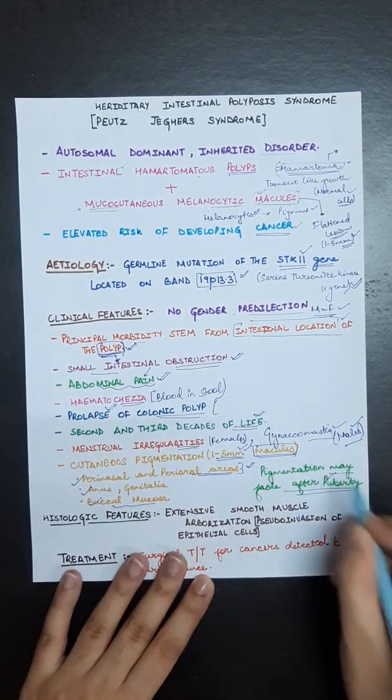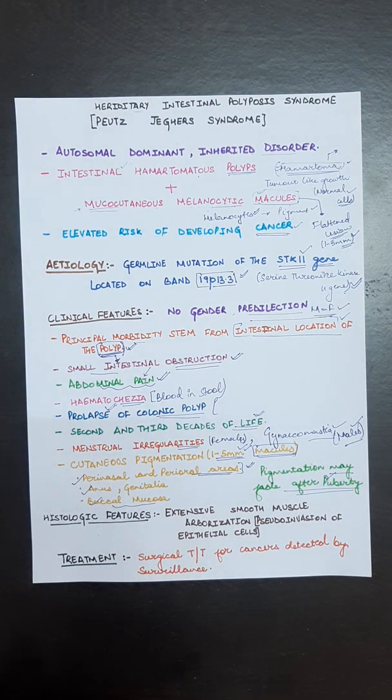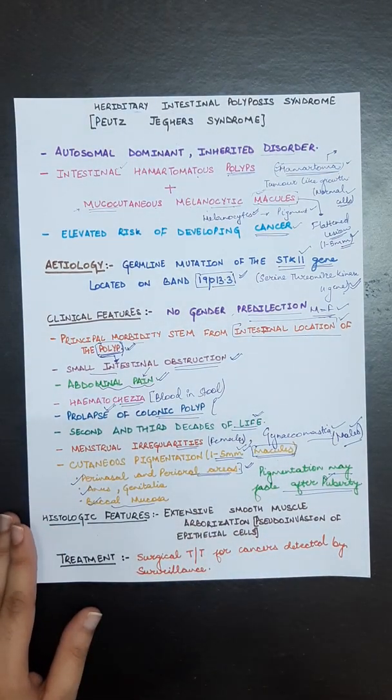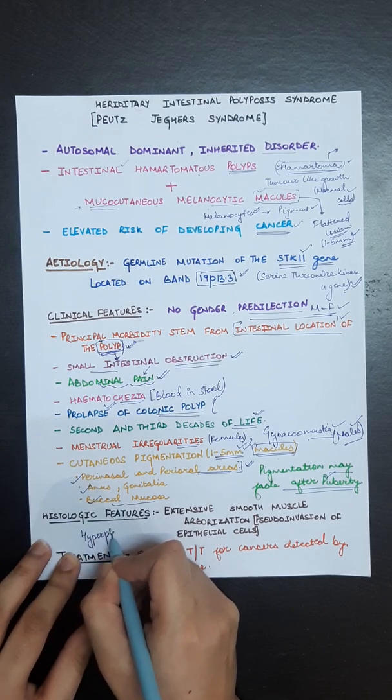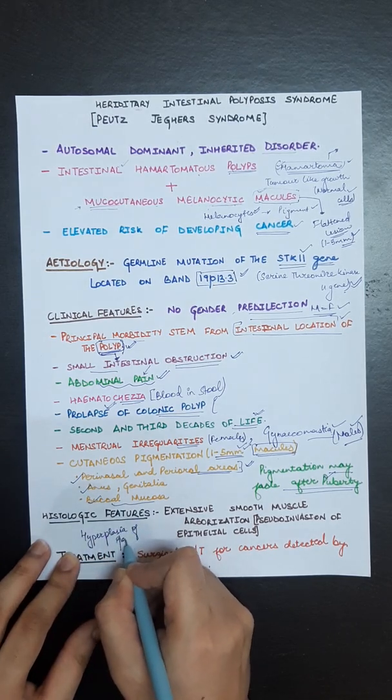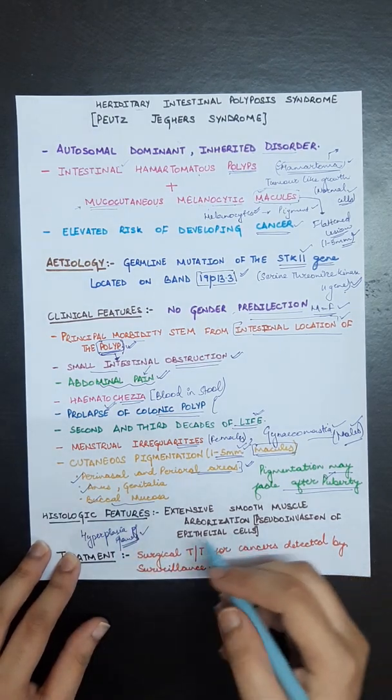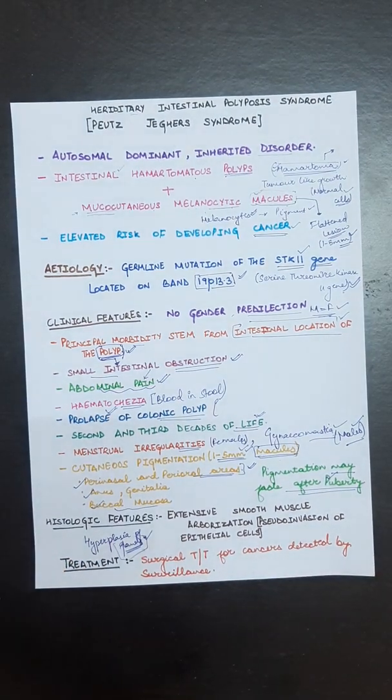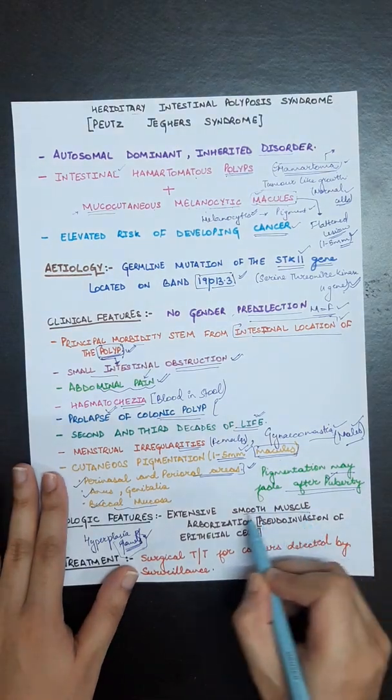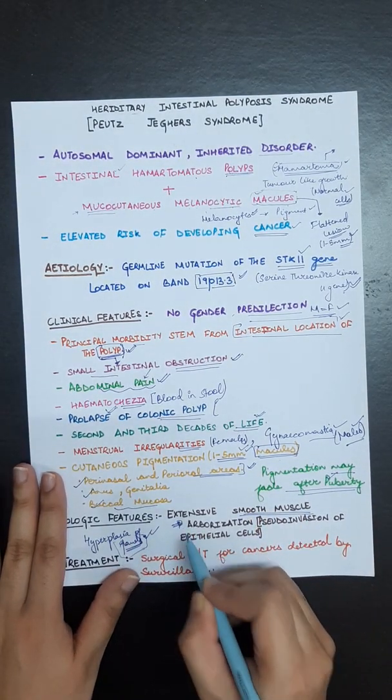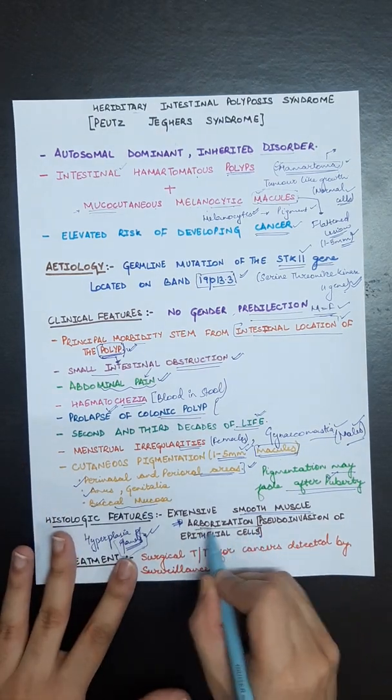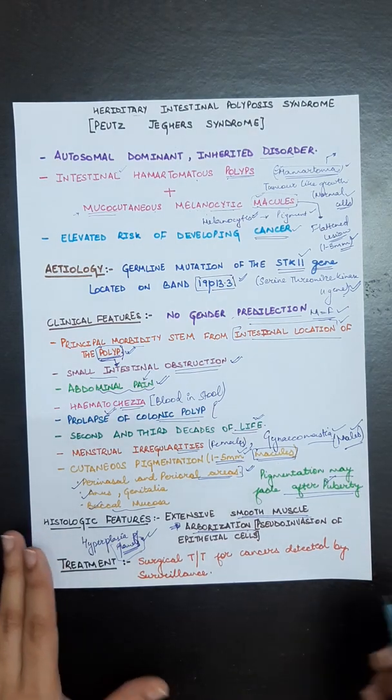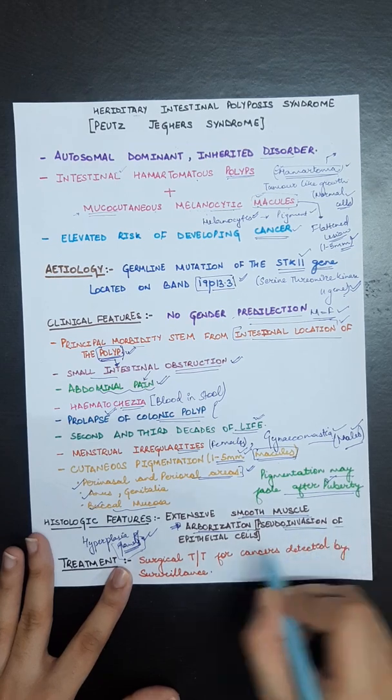Now the histological features of Peutz-Jeghers syndrome. There is hyperplasia of the glands in this syndrome. These glands will be invaded by or intersected by smooth muscles, which means there will be smooth muscle arborization. There is pseudo-invasion of epithelial cells.